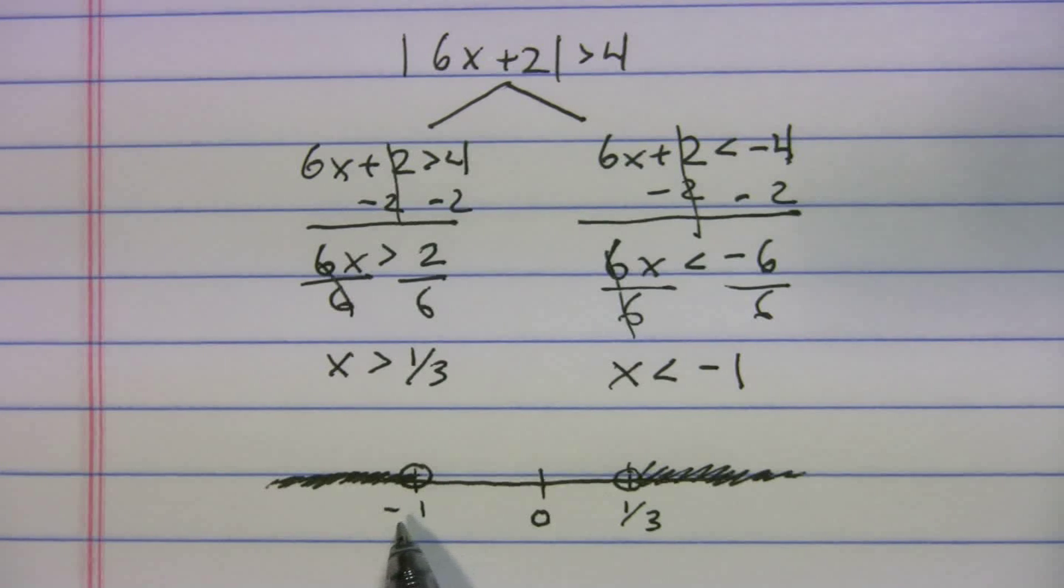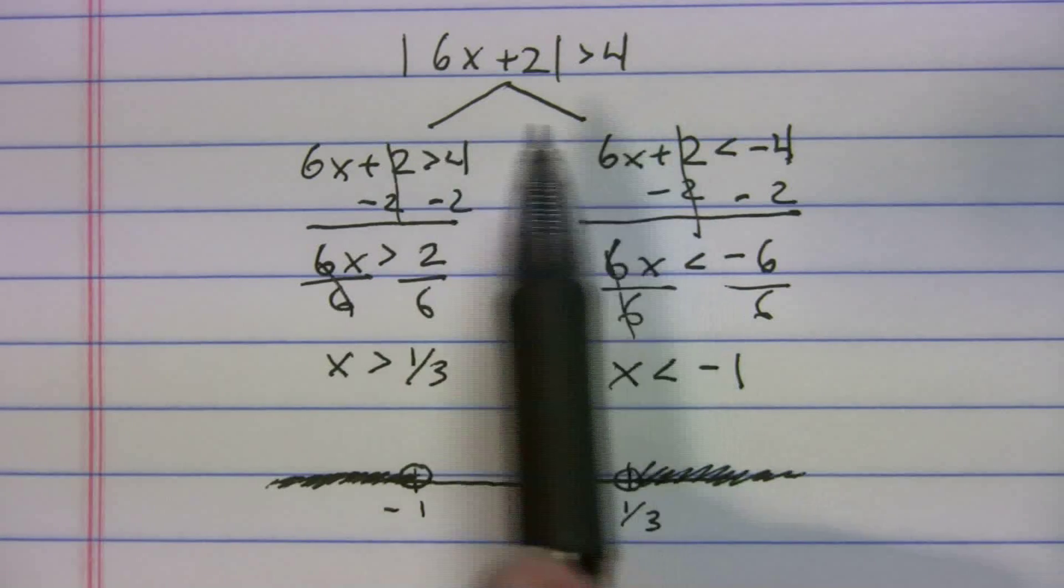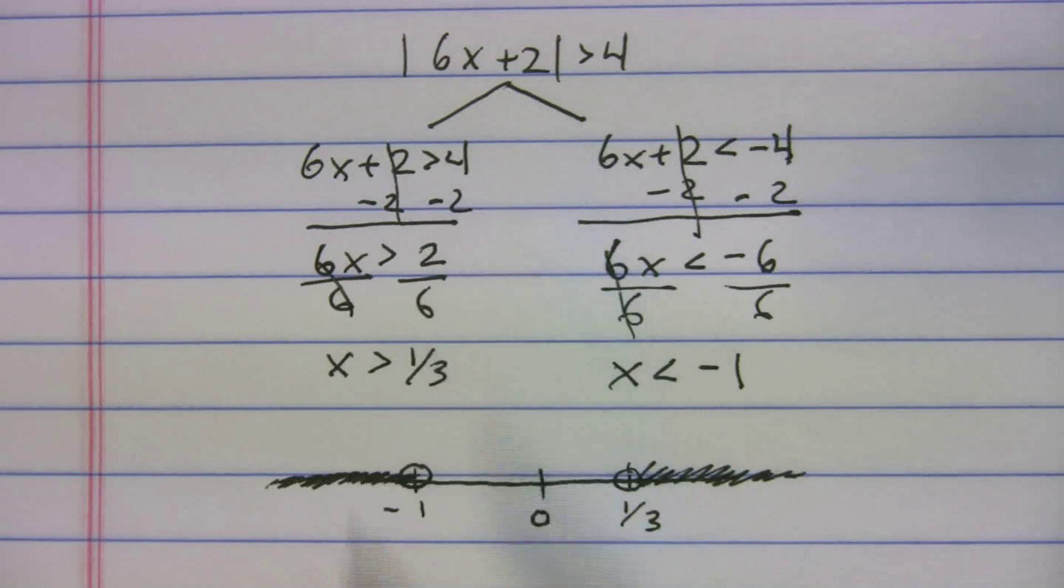So anything to the right of 1/3 or to the left of -1 should work or will work for this equation right here. It will satisfy that absolute value inequality.